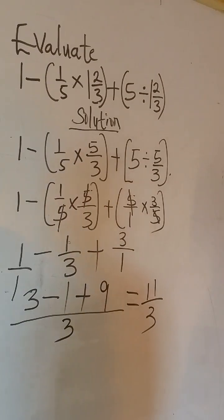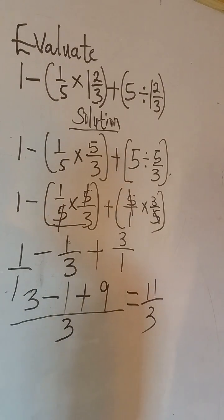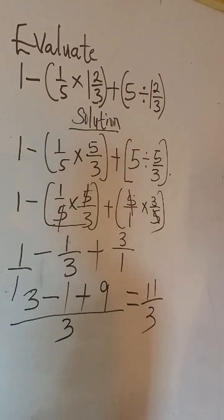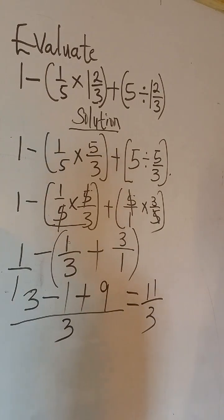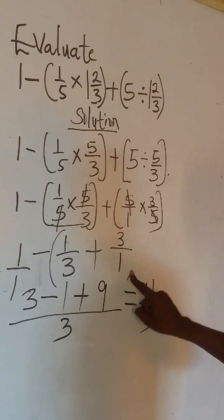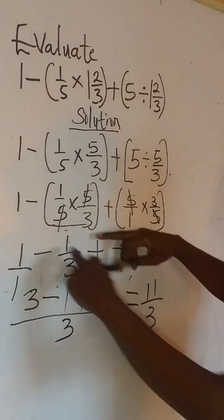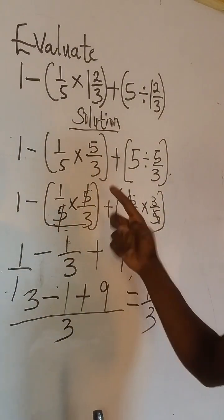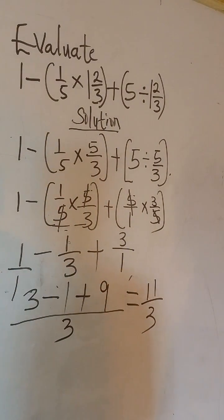Now let me explain something here. The moment you are done solving a number in the bracket, the bracket has to be removed. You don't have any reason putting this into bracket again. Because you have solved the numbers in the bracket. So this bracket is like a bondage. And the moment you are done solving the numbers in the bracket, then the bondage is loosed.